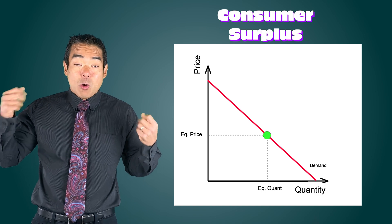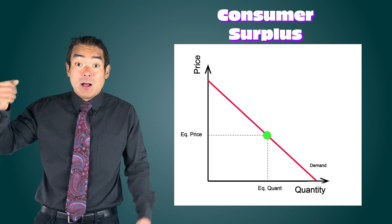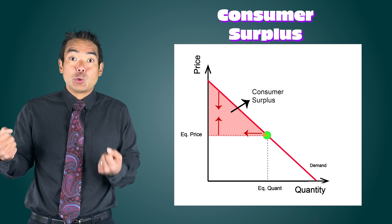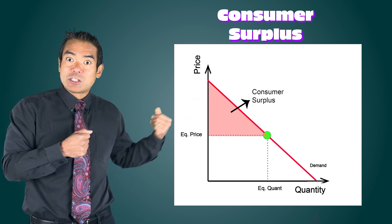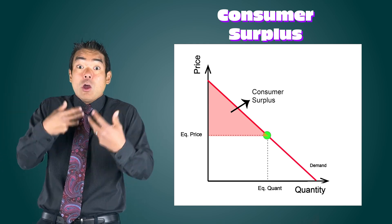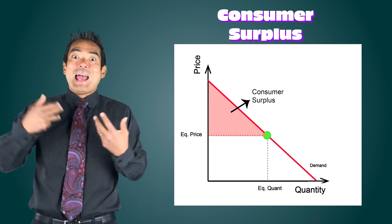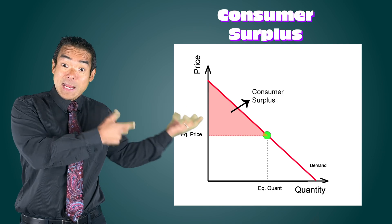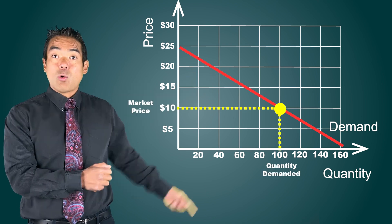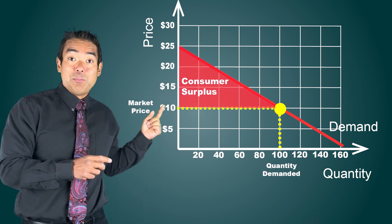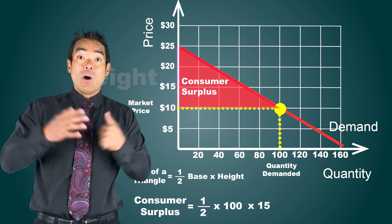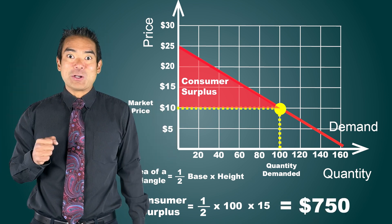On market demand curves, we represent consumer surplus as the area below the demand curve, above price, and to the left of the quantity that consumers actually buy. The area of consumer surplus, which is often a triangle, represents the total difference between the price all consumers would have been willing to pay and what they actually paid. To calculate it, we calculate the area of that shape. On this demand curve, if the market price is $10, quantity demanded is 100. The base is 100, the height is $25 minus $10, or $15 — one half times base times height — total consumer surplus is $750.